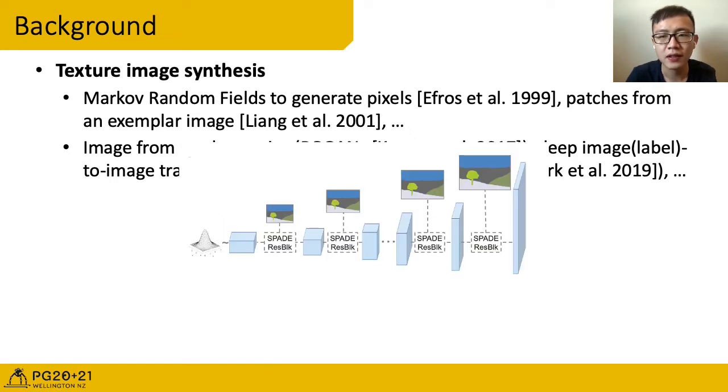This is SPADE, a deep label to image translation system. It also starts from a random noise, and adds semantic label image in every SPADE ResNet block. The semantic label image is a special image which only uses one color value to represent one class. Here, the sky is marked as blue, and the tree is marked as green.